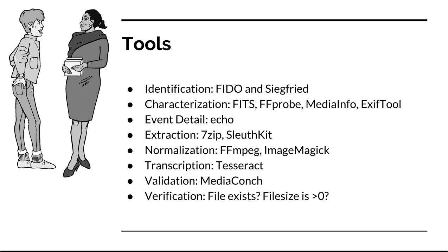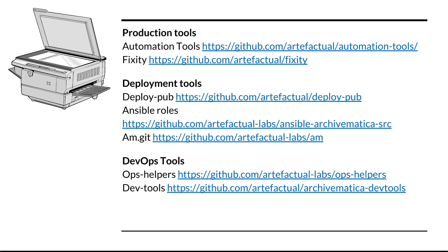All of these microservices use different programming languages. For instance, FIDO is built in Python, Siegfried is built in Go, and MediaInfo and MediaConch are built using C++. So lots of languages make up lots of tools that we manage and package into Archivematica. There are more tools outside of the main technical stack. Automation Tools allows Archivematica to be used without a user interface with preset configuration files. Fixity is our internal checksum management tool, and we manage our own packages in the DeployPub repository. Our Ansible roles are highlighted in the highlighted repository below.